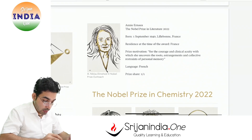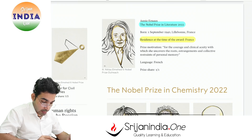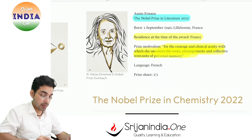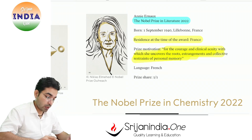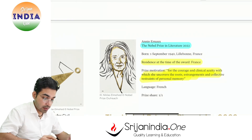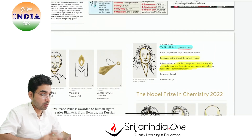Nobel Prize in Literature was awarded to a French author. Her book connects very easily with society through simplicity. The Nobel was given for 'the courage and clinical acuity with which she uncovers the roots, estrangements and collective restraints of personal memory.' Know this name for the Nobel in Literature.